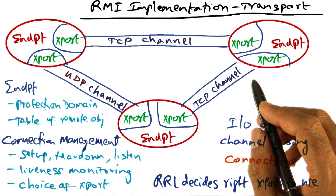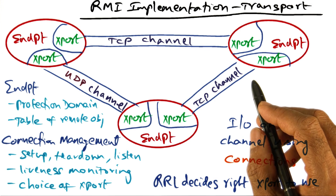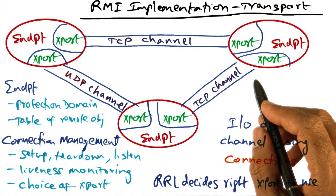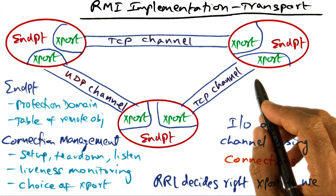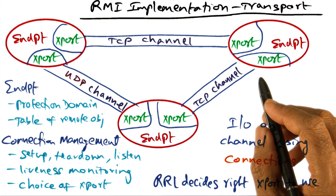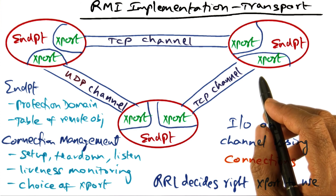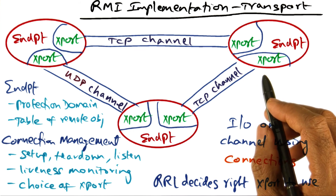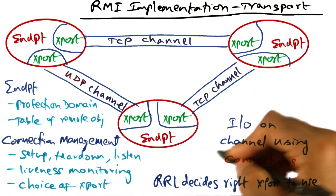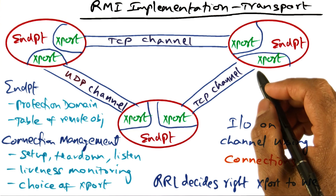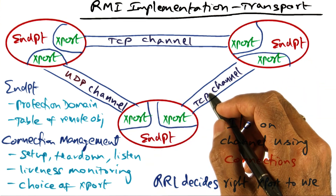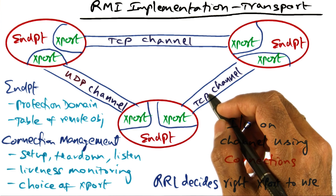In summary, the distributed object model of Java is a powerful vehicle for constructing network services. We saw a glimpse of the classes available in the distributed object model that make the developer's life easy in creating network objects and making them visible for clients to use anywhere. We also saw the power of the RRL layer in dynamically deciding how to make the client-server relationship similar to the subcontract mechanism, and the flexibility in connection management allowing different kinds of transport depending on client location and network conditions.